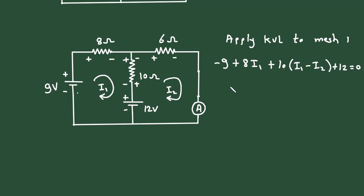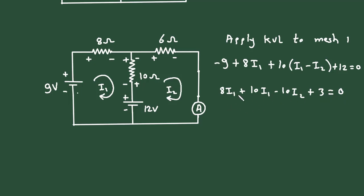Now let's simplify this. Writing the I1 terms: 8I1 plus 10I1 minus 10I2. Then minus 9 plus 12 gives plus 3, equals 0. Combining: 18I1 minus 10I2 equals minus 3. Let's call this equation number 1.